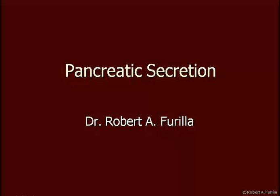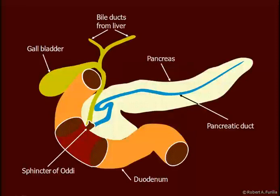Now let's discuss pancreatic secretion. The pancreas is located very close to the duodenum of the small intestine. The duct of the pancreas merges with the bile duct through the sphincter of Oddi.